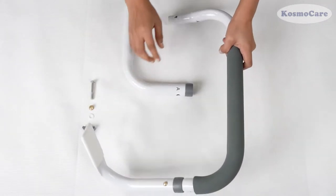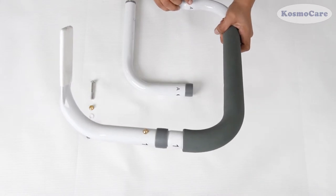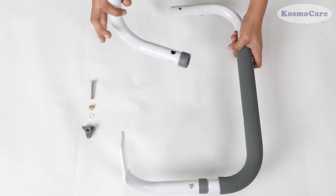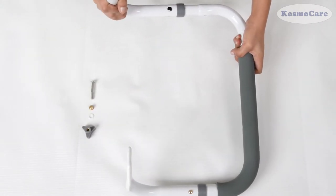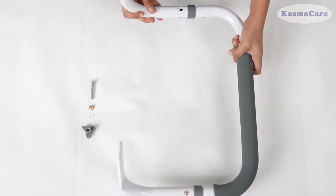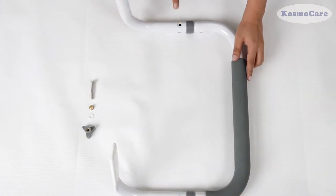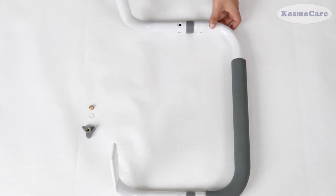Insert the end of the armrest labeled A into the end of the slide assist rail labeled A. The letter labels should line up with each other to make sure they are positioned properly. Fasten the two pieces together using the locking screws.